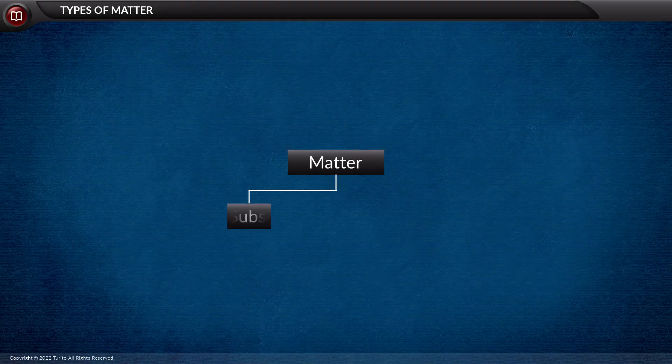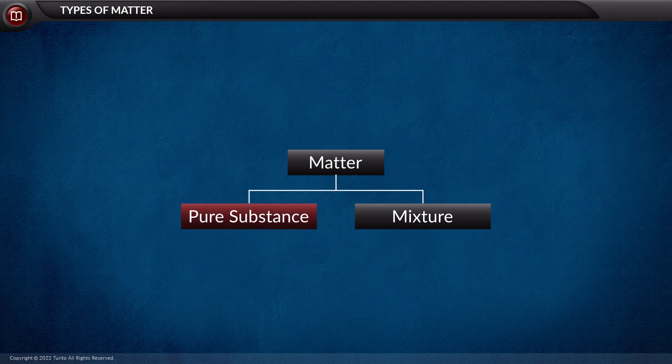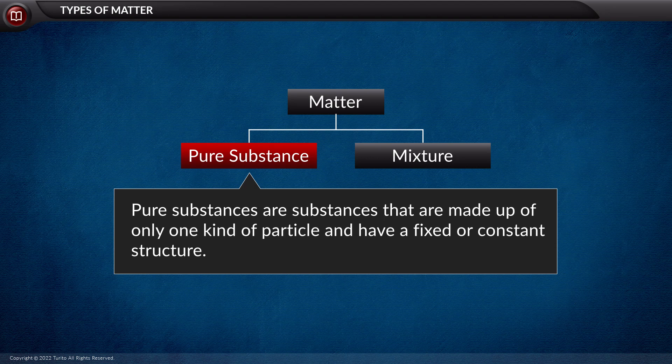Matter is classified as pure substance and mixture. Now can you tell me what you mean by pure substances? Yes, pure substances are substances that are made up of only one kind of particle and have a fixed or constant structure.